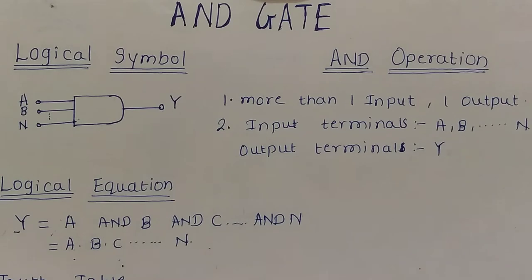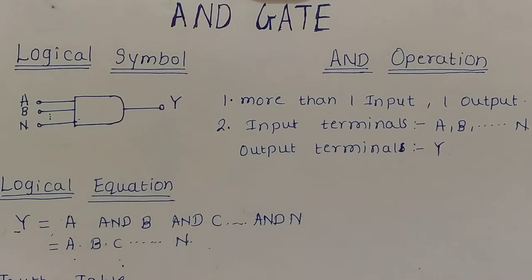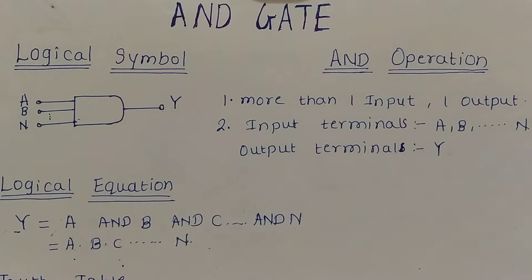Here we use the term 'gate.' Why have we used this term? Because there is a similarity between the operation of a gate and the digital circuit. If we consider the AND gate, it opens only when all its inputs are present — that means at logic level 1. We have already seen that the AND gate output is 1 only when all its inputs are 1. This same condition applies to a gate opening, which is why it is called a gate.